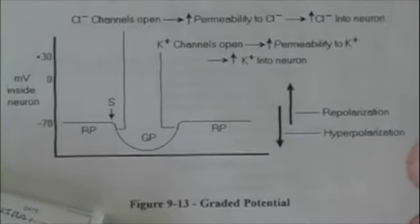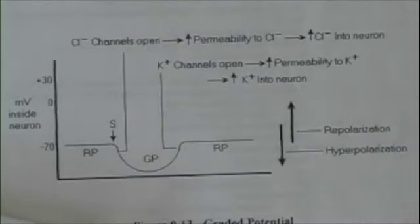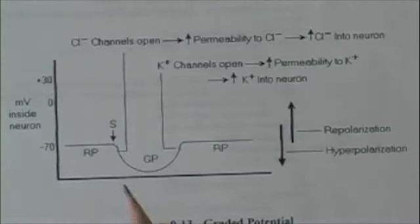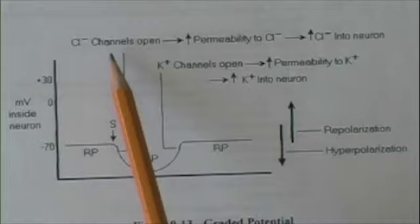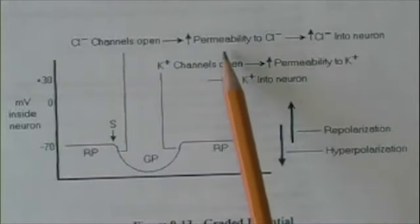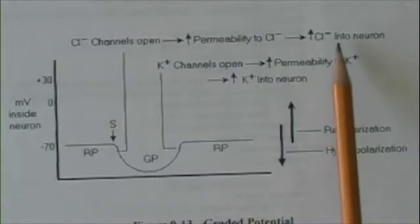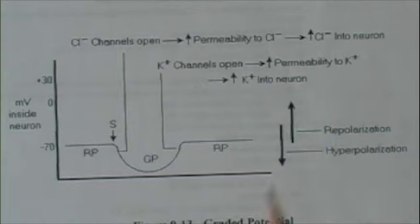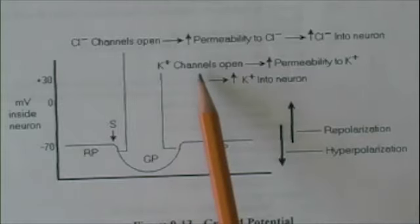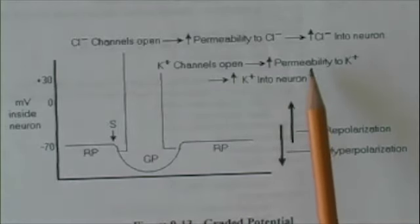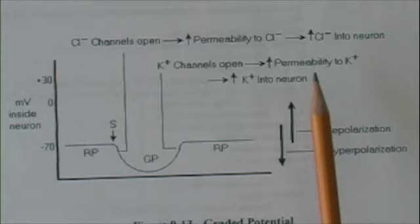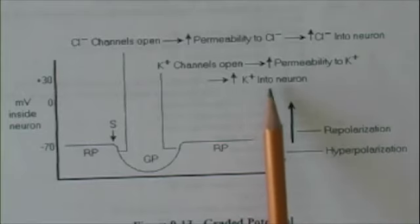Let's look at the other situation. In this case, the stimulus causes something else to happen. It causes chloride channels to open, increasing the permeability to chloride, increasing chloride movement into the cell. This is immediately followed by opening of potassium channels, which increases the permeability to potassium, leading to increased movement of potassium into the neuron.